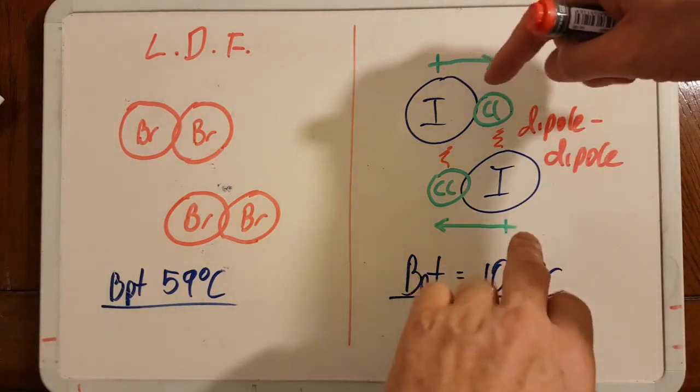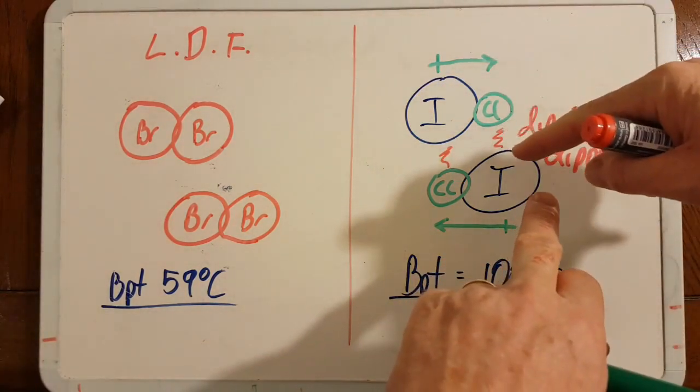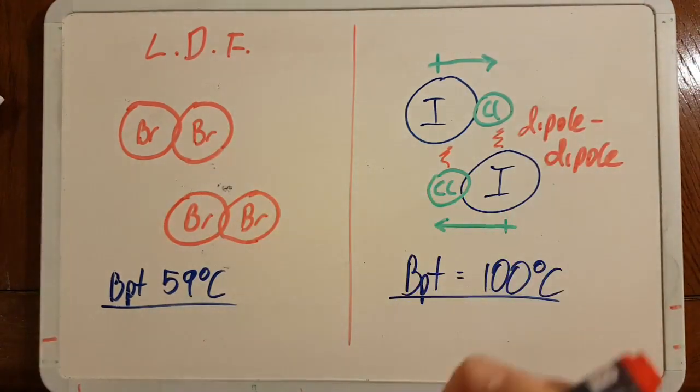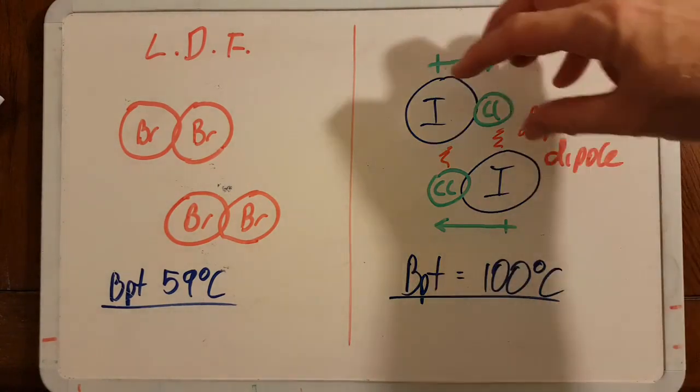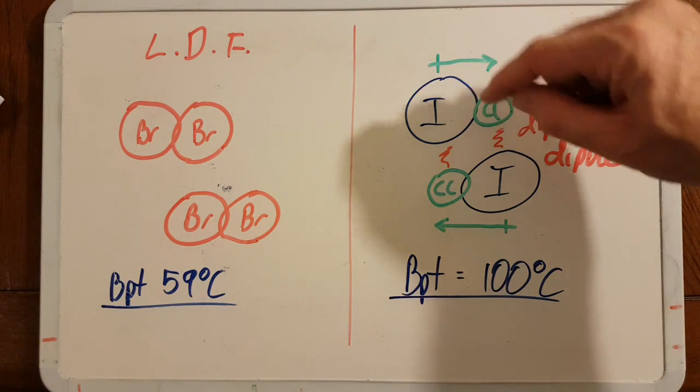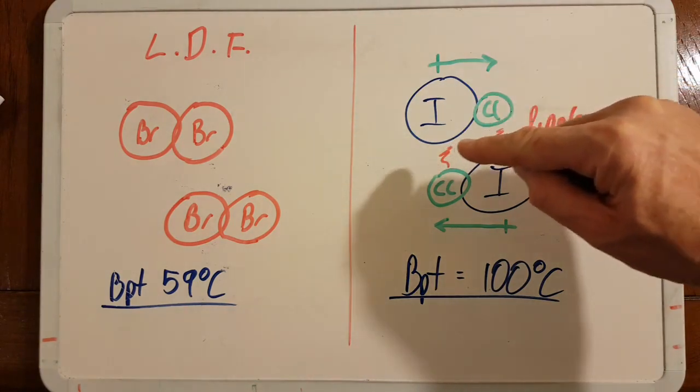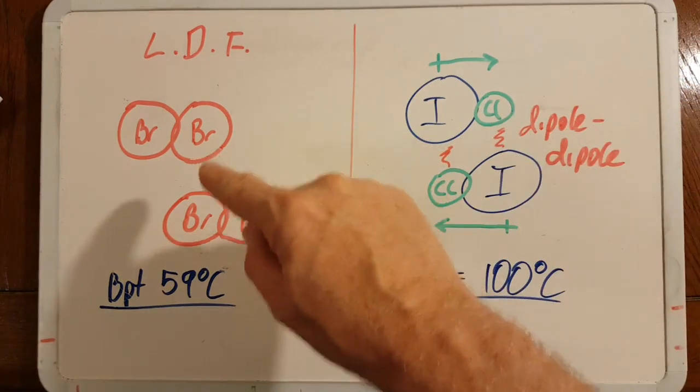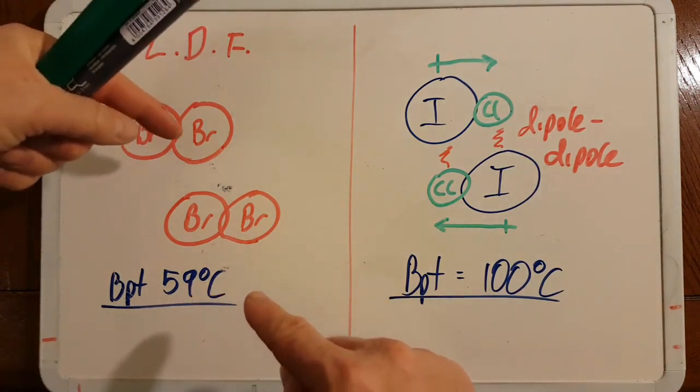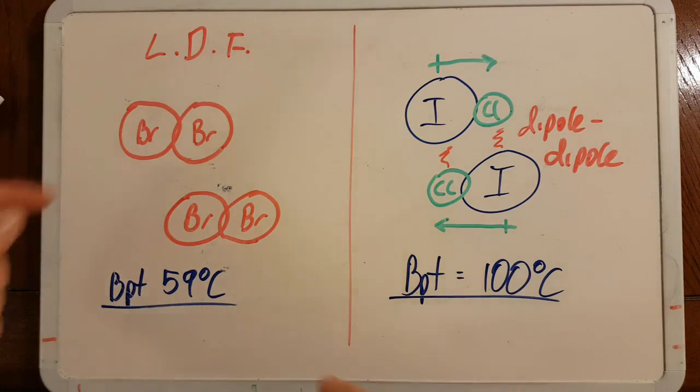So these actually have extra bonds that are stronger between the molecules than the bonds over here, which are weaker. That's why it takes a higher temperature. If I want to rip this molecule off of that one, I have to put more energy in to break those stronger dipole-dipole attractions. Over here it's got a lower boiling point because to pull this molecule off, I've only got to break the weaker London dispersion forces.